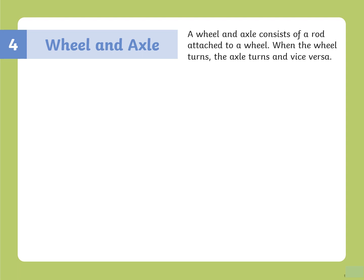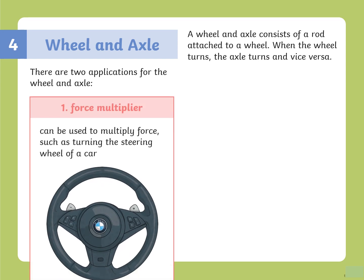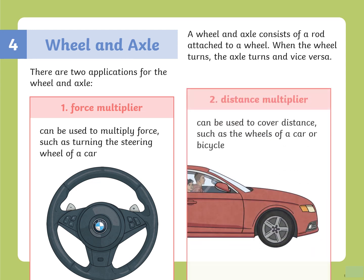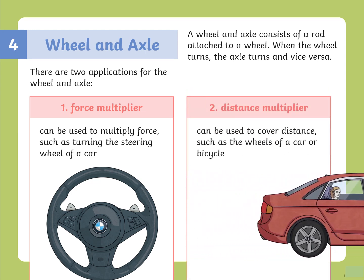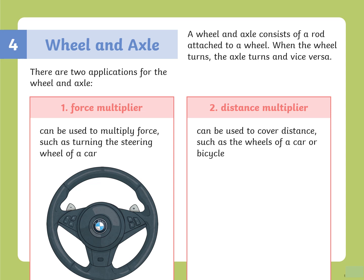The fourth simple machine is wheel and axle. A wheel and axle consists of a rod attached to a wheel — when the wheel turns, the axle turns, and vice versa. There are two applications: as a force multiplier, such as turning the steering wheel of a car, and as a distance multiplier, such as the wheels of a car or bicycle, which help cover long distances.